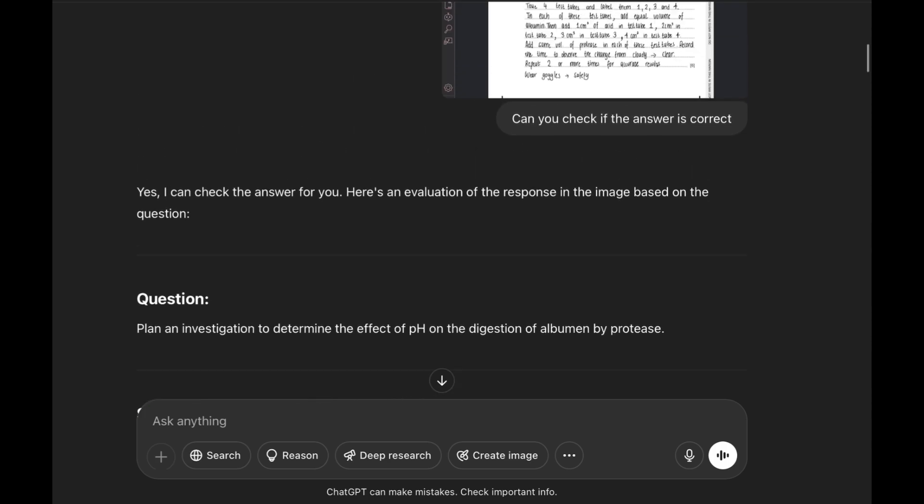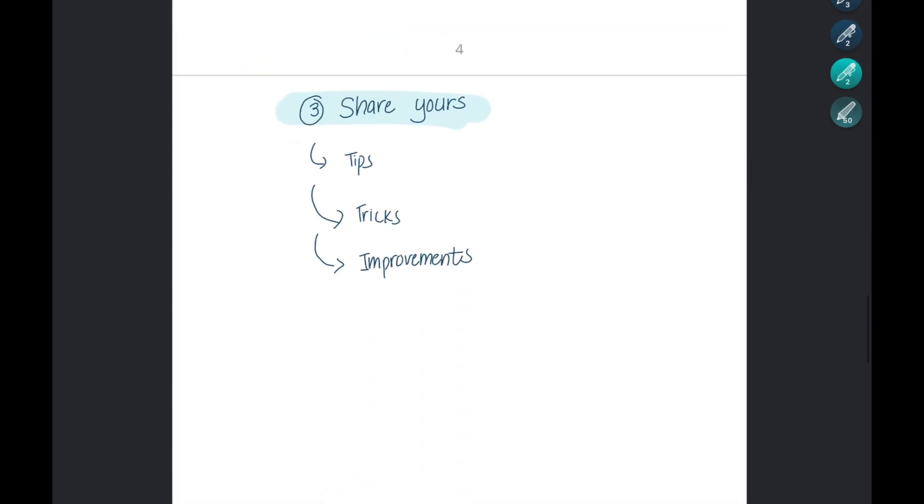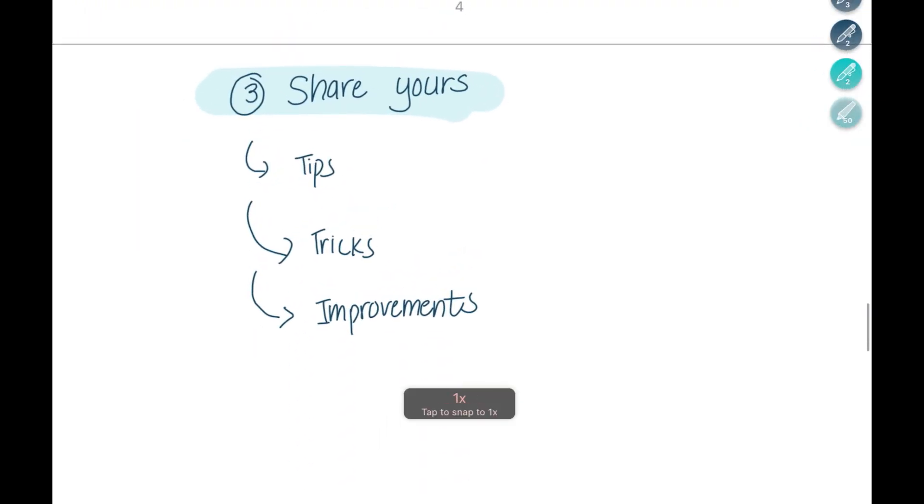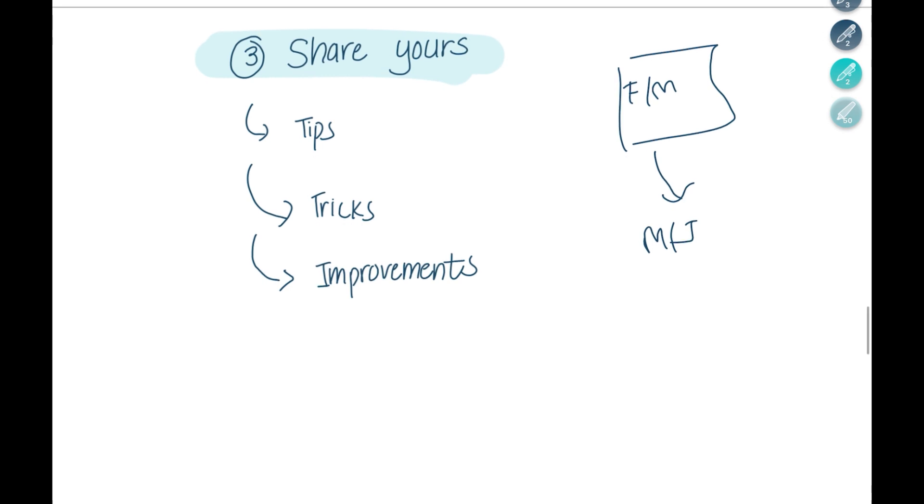Finally, I want you all to share your tips and tricks or any improvement that we can include when we are using AI or ChatGPT. One tip that I heard from somebody was somebody uploaded their question, like a February/March question, and asked ChatGPT to suggest questions that could appear in May/June—suggest similar questions.